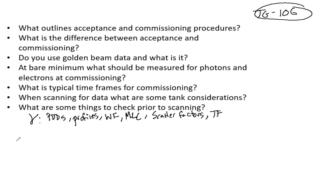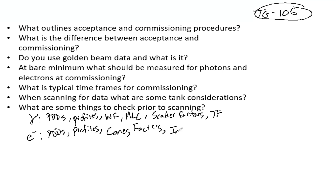For electrons, you similarly need percent depth doses and profiles — both in-plane and cross-plane. Since electrons use cones, you need cone factors as well as applicator or insert factors, because different applicators produce changes in output when the field size is not the reference 10x10. You also need the virtual source position. Those are the bare minimum measurements needed for both the photon and electron beams.